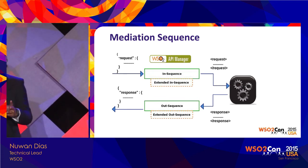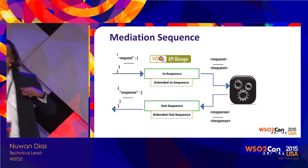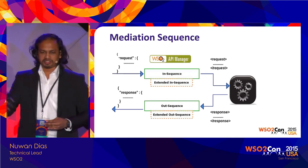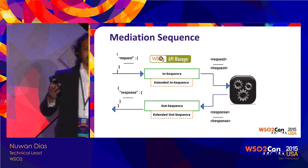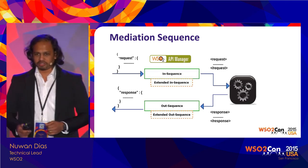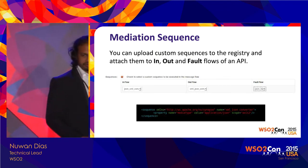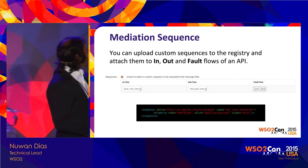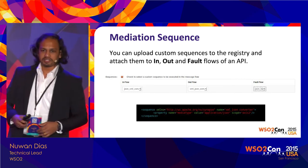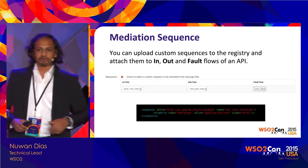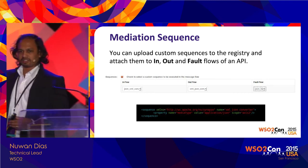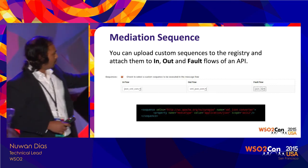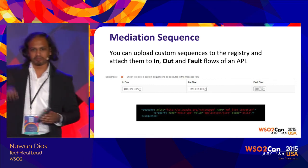You do this by having a message mediation policy which acts as an extension to the in-sequence and out-sequence. This extension sequence or policy takes care of your message transformation, dynamic routing requirements, and similar use cases. This is the kind of UI that allows you to select those policies at the time of designing an API — selecting policies from a predefined list and choosing in which flow to apply them. These policies are defined in the Synapse configuration language, available on the ESB, and are based on XML.